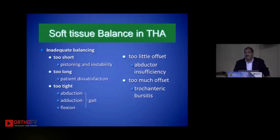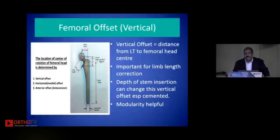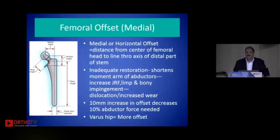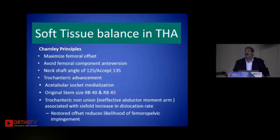Coming to soft tissue balance: this is as crucial in hips — if not more so — as compared to knees. Offset is a very important component. Vertical offset refers to the distance from the greater trochanter to the femoral head center, and it's crucial for limb length correction. Medial offset is the distance from the center of the femoral head to the line through the axis of the distal part of the stem. Inadequate restoration of femoral offset is not good news for the longevity of the hip.